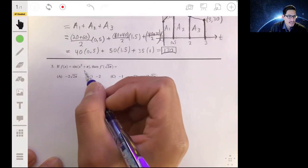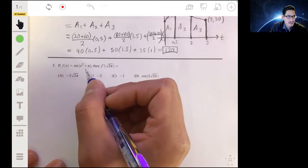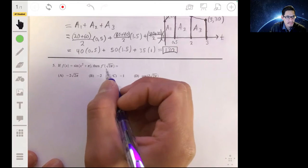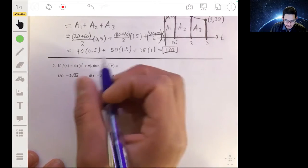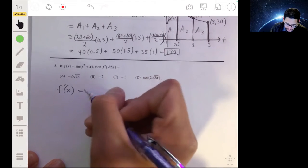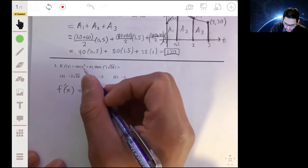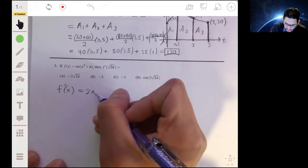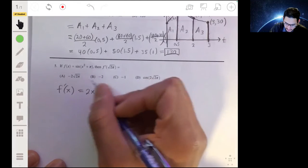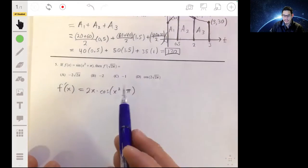Alright, number five. You have f of x is the function sine of x squared plus pi. And we want to find f prime of the square root of 2 pi. So first find what f prime of x is. We're going to use chain rule. So the derivative of the inside, which will be 2x, times the derivative of the outside, which will be the cosine of x squared plus pi.